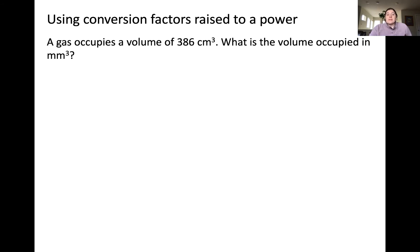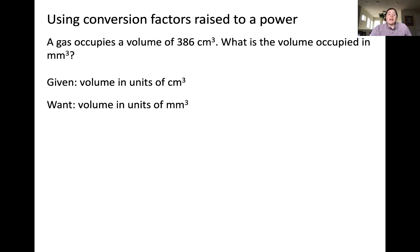Let's imagine a practice problem where we have a gas that occupies a volume of 386 centimeters cubed. The question is asking to convert this volume to millimeters cubed. What we're given is a volume in units of centimeters cubed, but what we want to obtain is volume in terms of millimeters cubed. We can take what we know from metric prefixes and write a plan where we go from centimeters cubed to meters cubed to millimeters cubed.